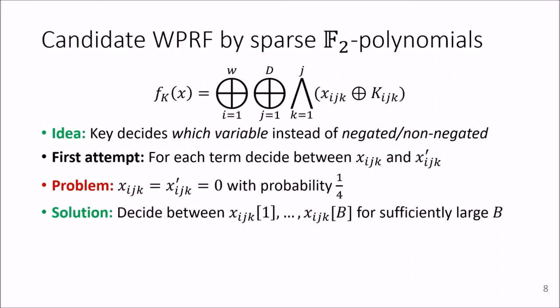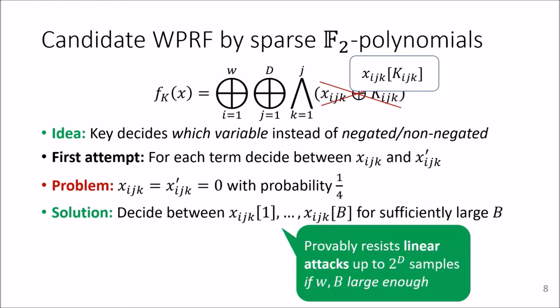And this attack does no longer apply. So then instead of Xijk XOR the key, what we will do is having the key pick which of the variables Xijk to pick.